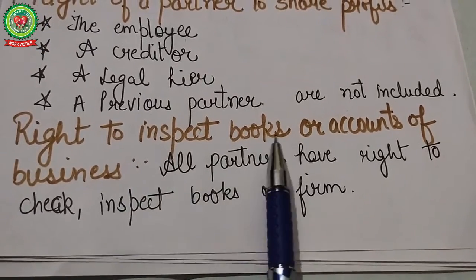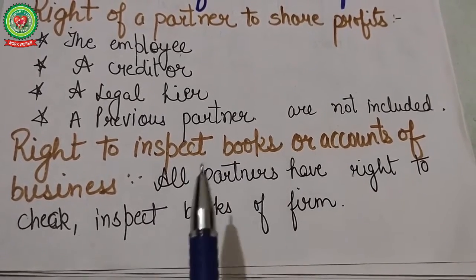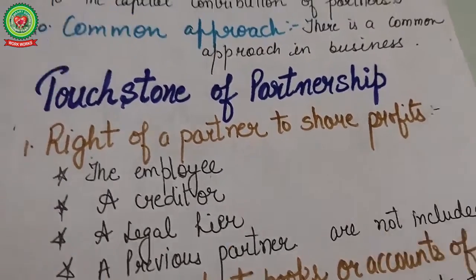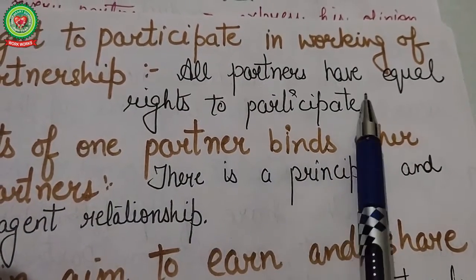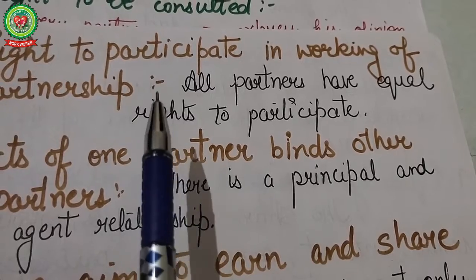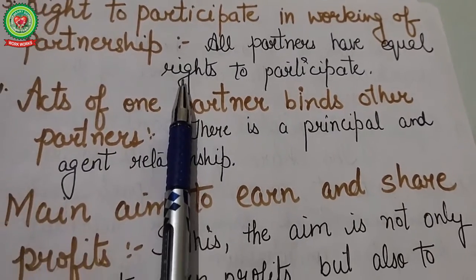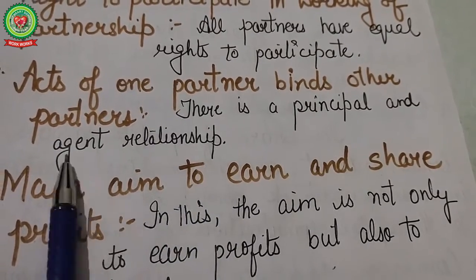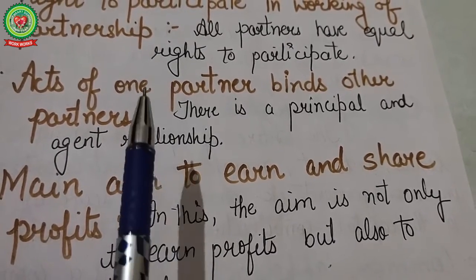Next is the right to inspect books of accounts: all partners have a right to check or inspect the books of the organization. Next is the right to participate in the working of the partnership: all partners have equal rights to participate in management, and any one person running the business represents all other partners. Next, acts of one person bind other partners: in partnership there is a principal and agent relationship, and acts done by one partner bind all other partners.